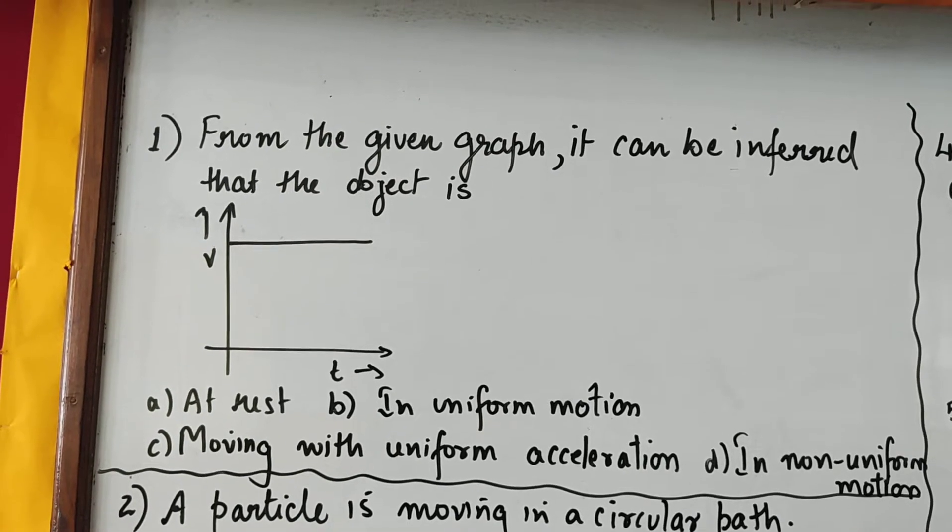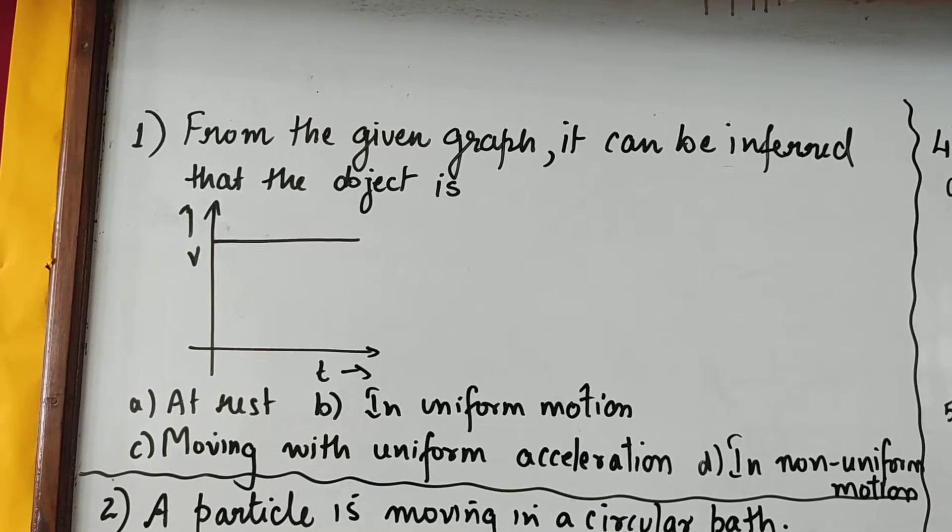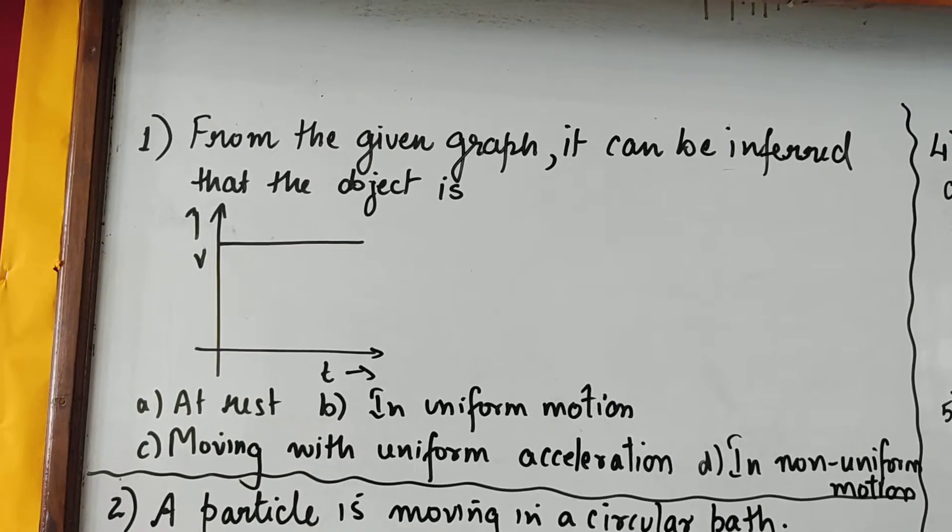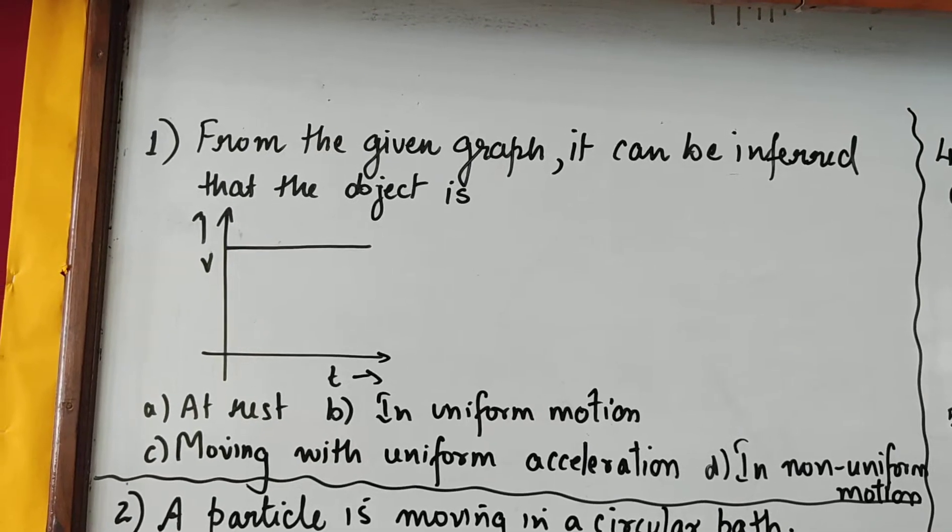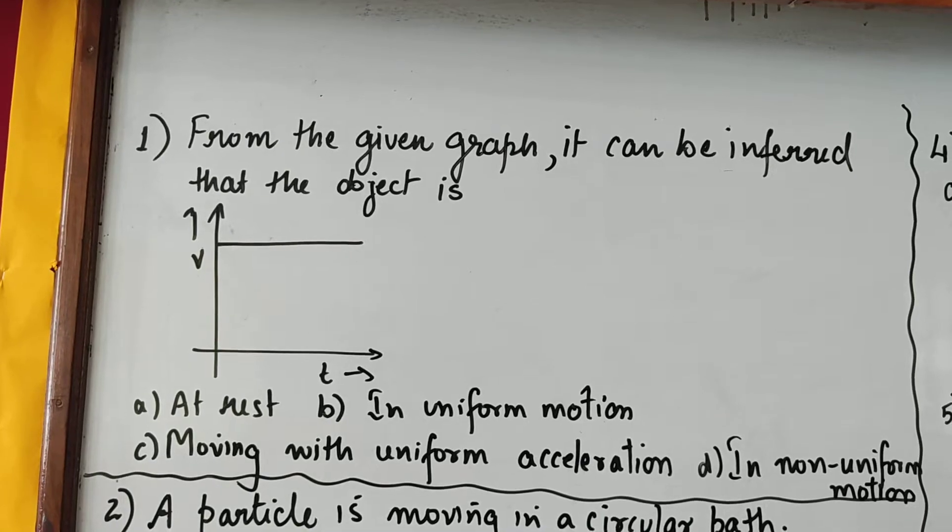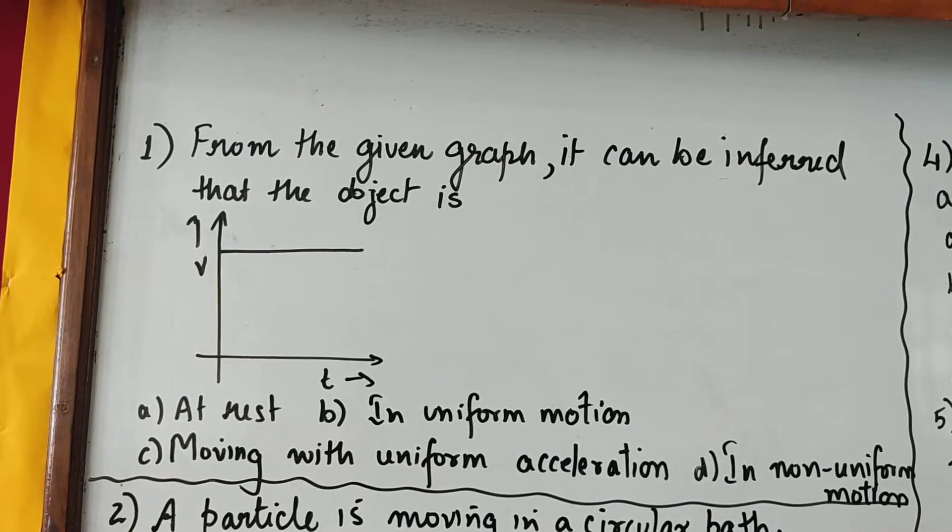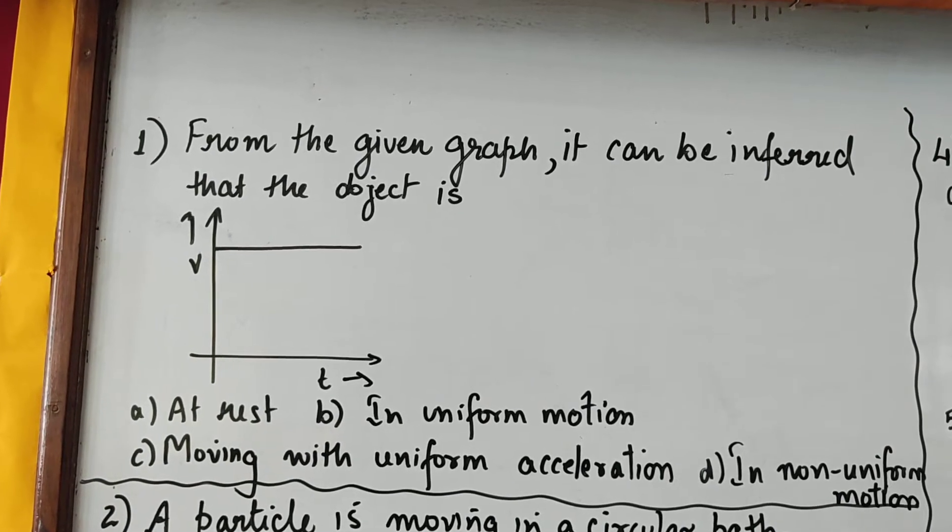So let us see our first MCQ today. From the given graph, it can be inferred that the object is - you can have a look at the graph. First of all, see that it is labelled as V vs T, it means it is a VT graph. So it may be a speed time or velocity time graph, but unless specified, we will assume that the body is moving along a straight line.